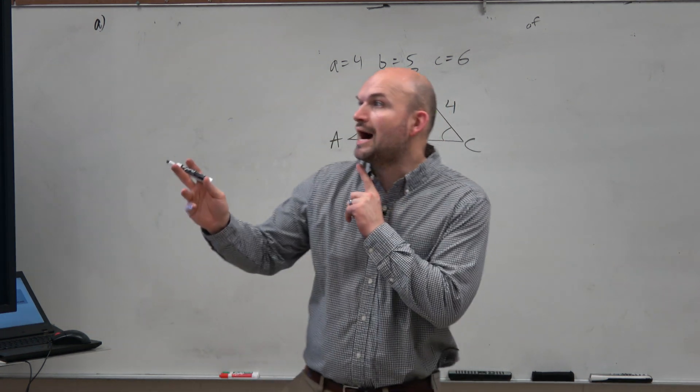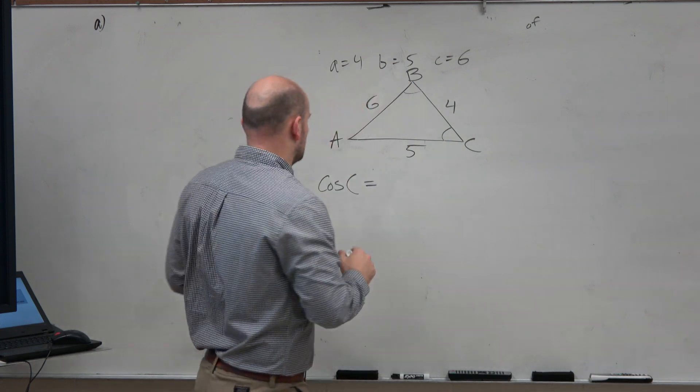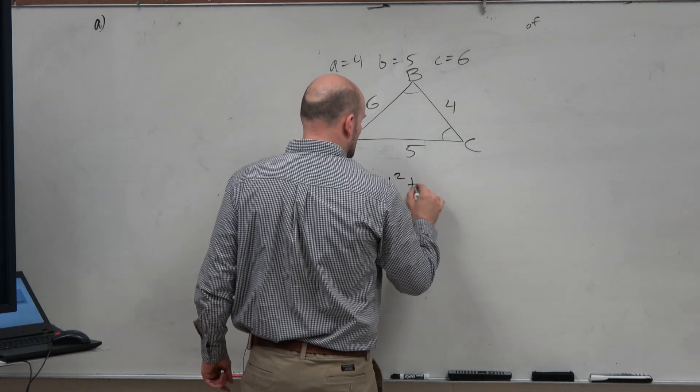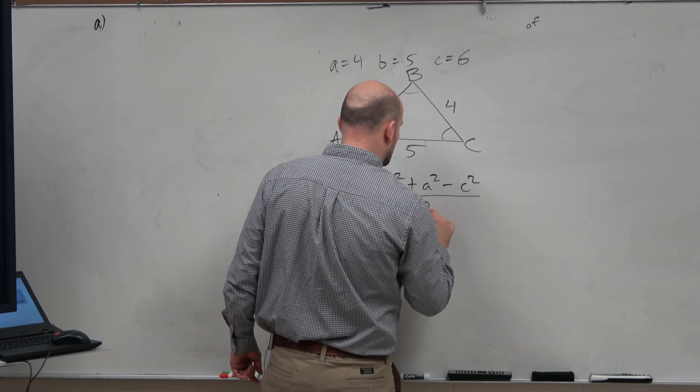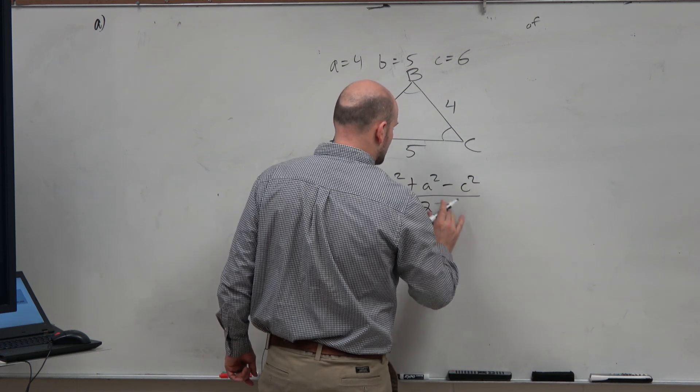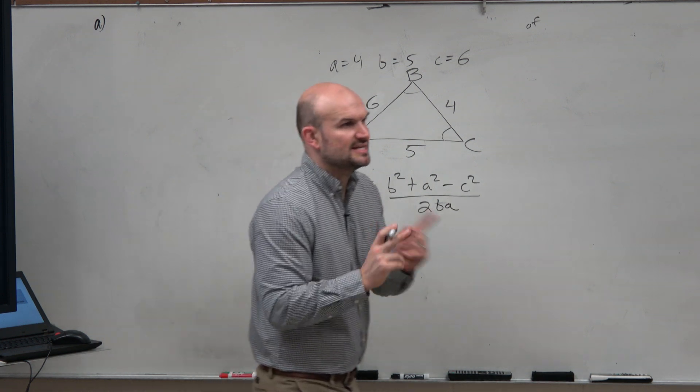So I'm basically going to swap the C and the A. So this would be B squared plus A squared minus C squared all over 2 times B times A. Do you guys see how I do that? I just swap the A and C.